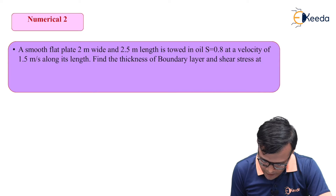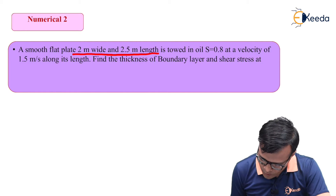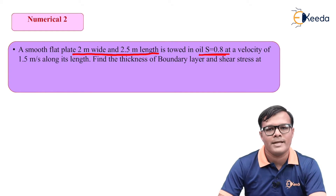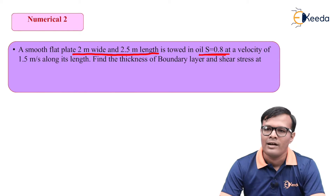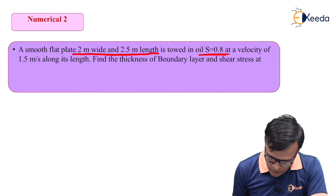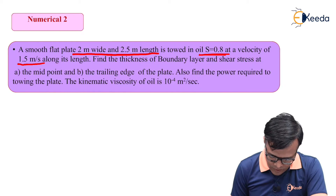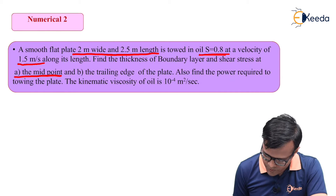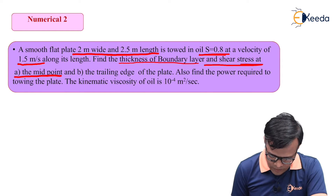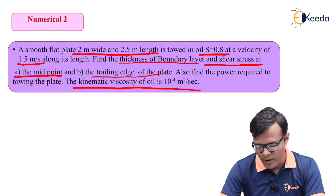A smooth flat plate 2 meter wide and 2.5 meter length is stored in oil. The oil has a specific gravity of 0.8. Velocity of flow U is given as 1.5 meter per second. We need to find the thickness of boundary layer and shear stress at the midpoint and at the trailing edge of the plate. Also find the power required to tow the plate. Kinematic viscosity is given as 10⁻⁴ meter square per second.